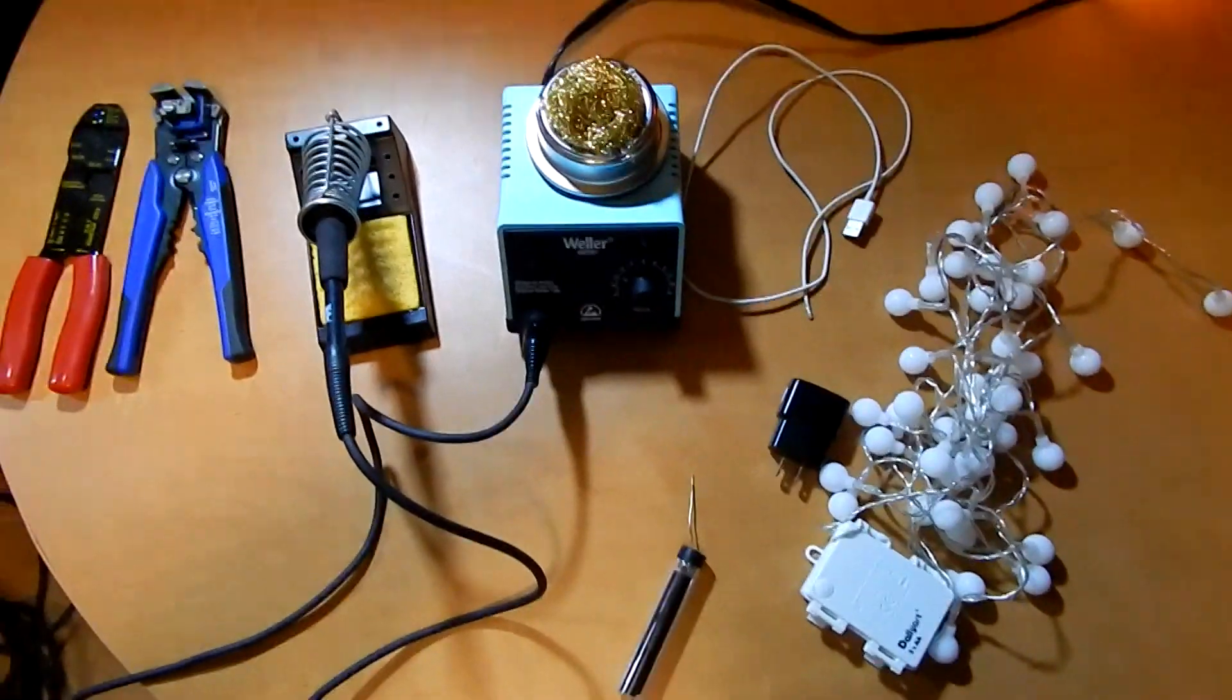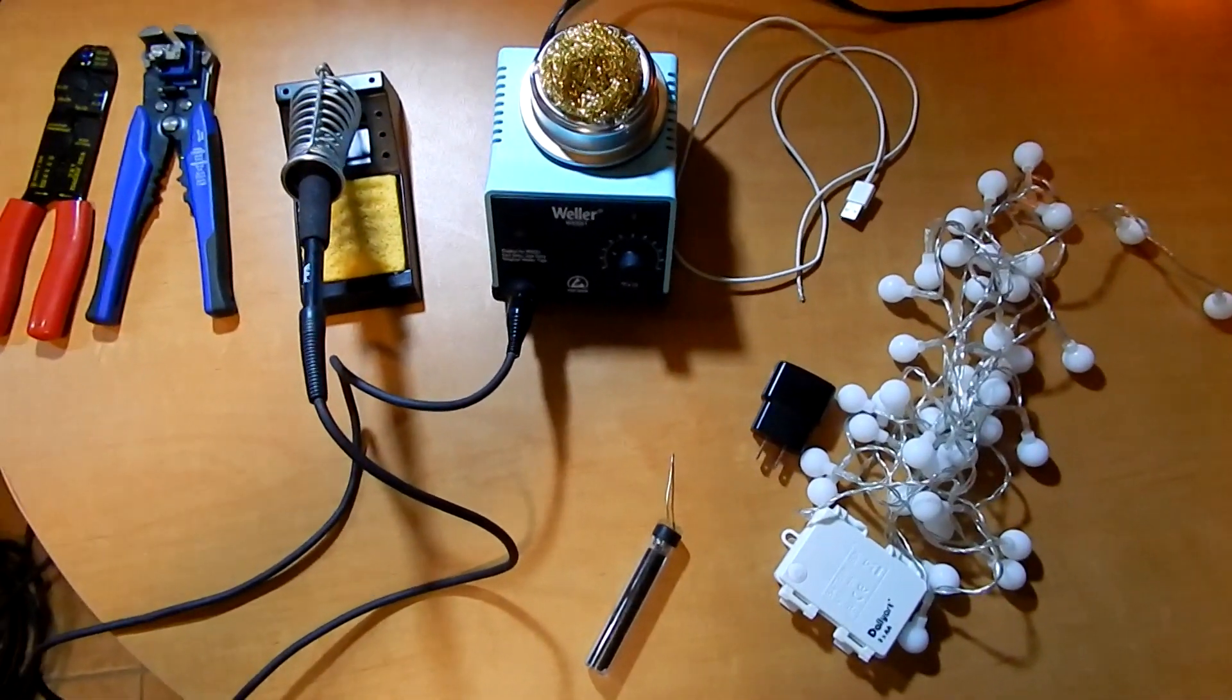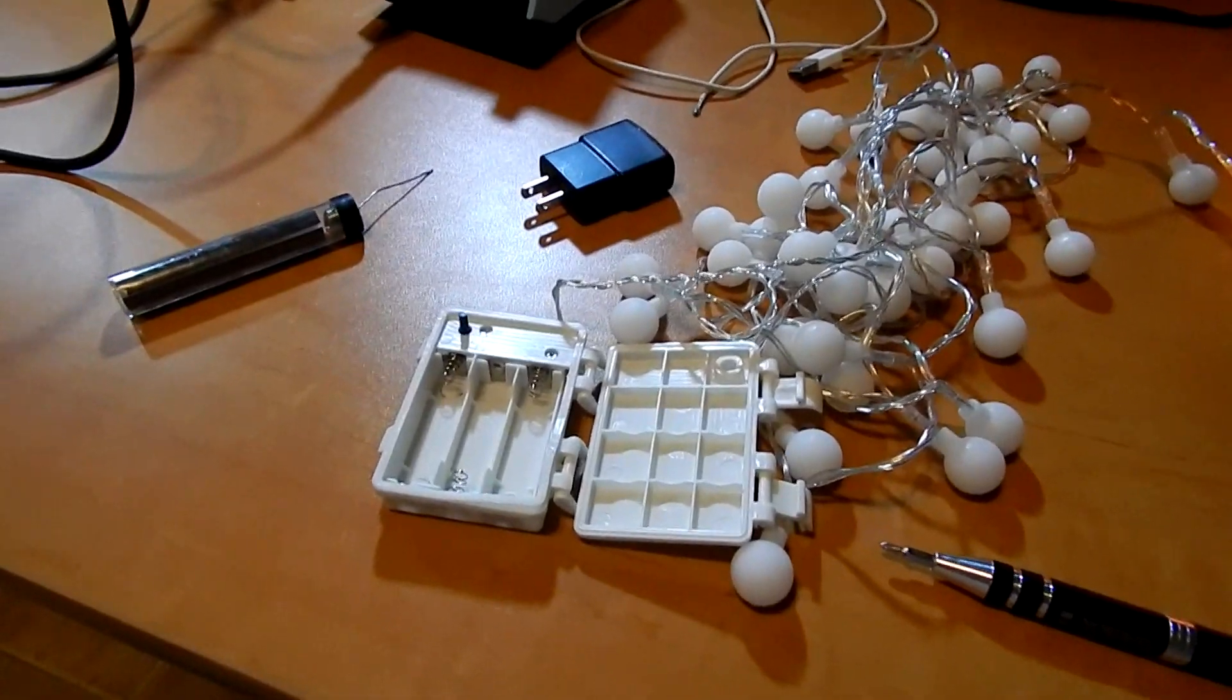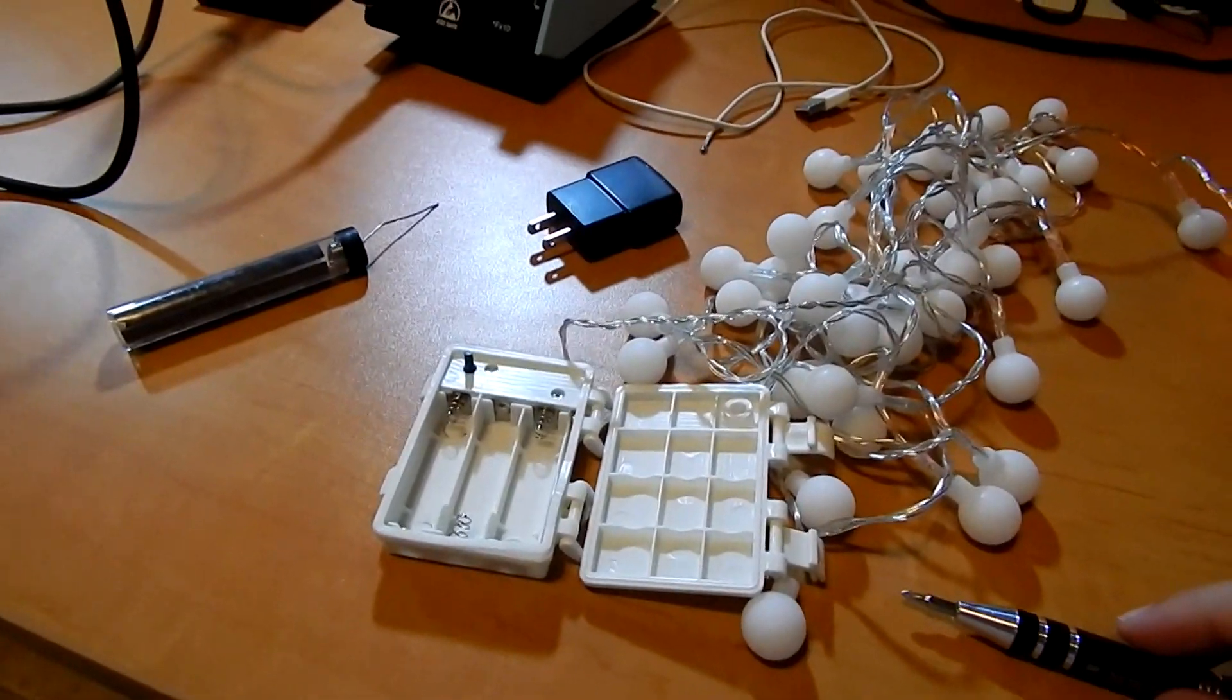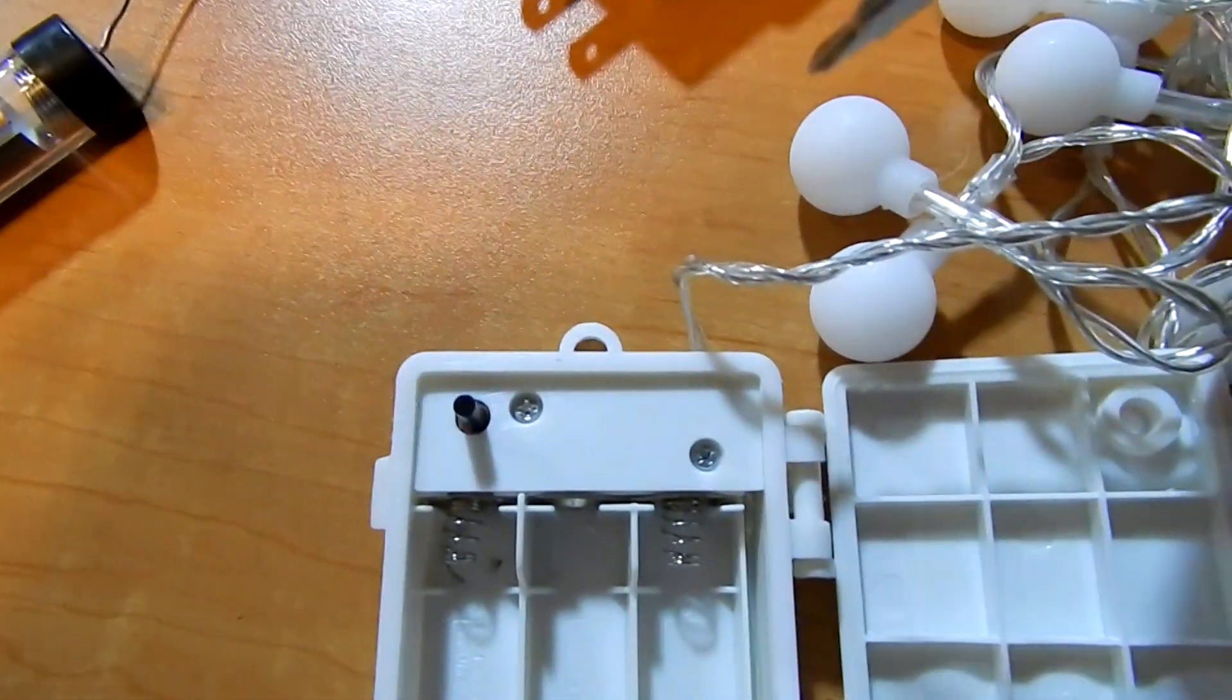You'll also need to use a soldering iron with solder and your wire strippers. Alright, so next what you'll need to do is use a screwdriver to get into these two screws on the lights themselves.